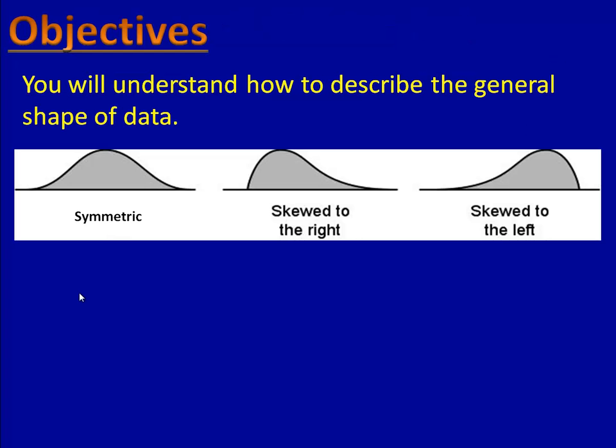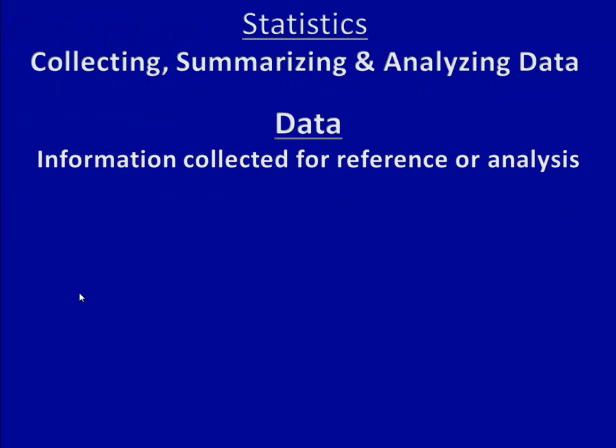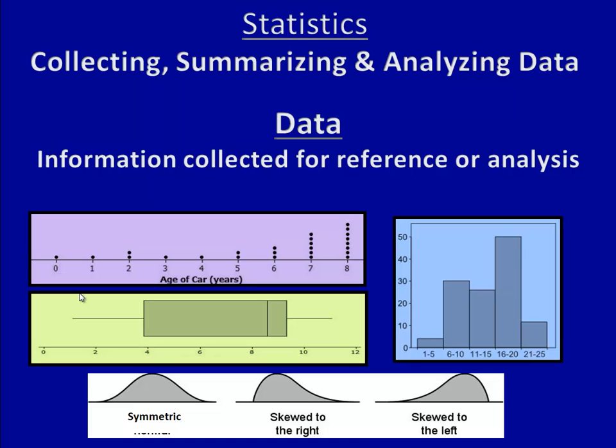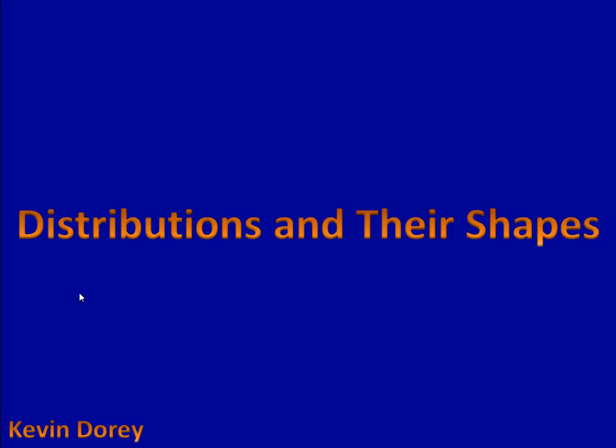So here's what you should know. You should be able to understand the shape of data. To classify it as symmetric, skewed to the right, or skewed to the left. You should know that statistics is the process of collecting, summarizing, and analyzing data. Data is simply the information that we have. Finally, we have three types of graphs we can use to summarize this information. A dot plot, a histogram, and a box plot. And that's everything you need to know to get started working with distributions and understanding their shape.